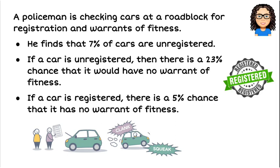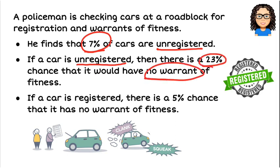A policeman is checking cars at a roadblock and he's looking for warrants and registrations. He finds that 7% of cars are unregistered. When a car is unregistered, there's a 23% chance it has no warrant of fitness. If a car is registered, there's a 5% chance it has no warrant of fitness. We want to set this up as a tree diagram.